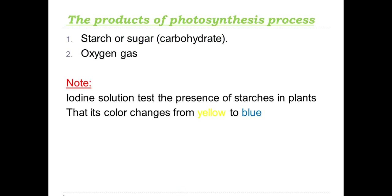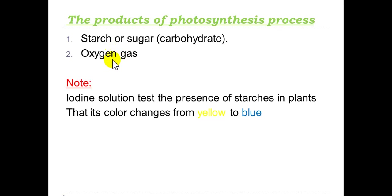The products of photosynthesis process: in photosynthesis, plants produce two products — starch or sugar or carbohydrates, and oxygen gas.